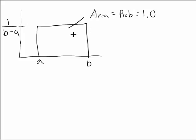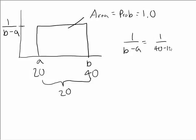Well, the area under here has to be 1. So let's just say a was 20 and b was 40, the distance between a and b would be 20. And what would 1 over b minus a be? Well, 1 over b minus a would equal 1 over 40 minus 20, which is equal to 1 over 20.